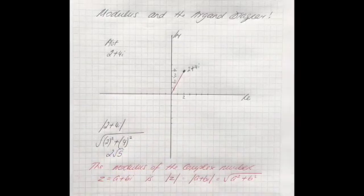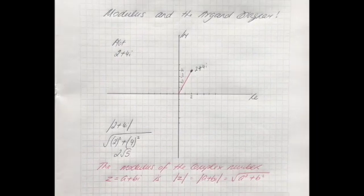So the square root of 2 squared plus 4 squared is of course 2 root 5. And you can leave it like that unless they ask for it to a certain amount of decimal places.